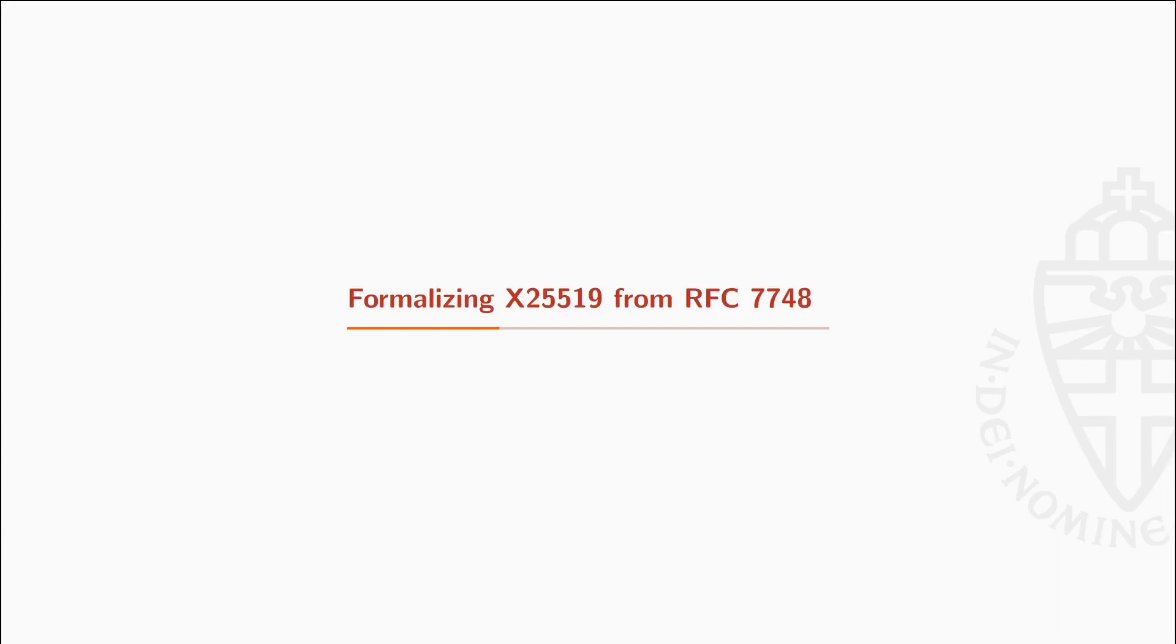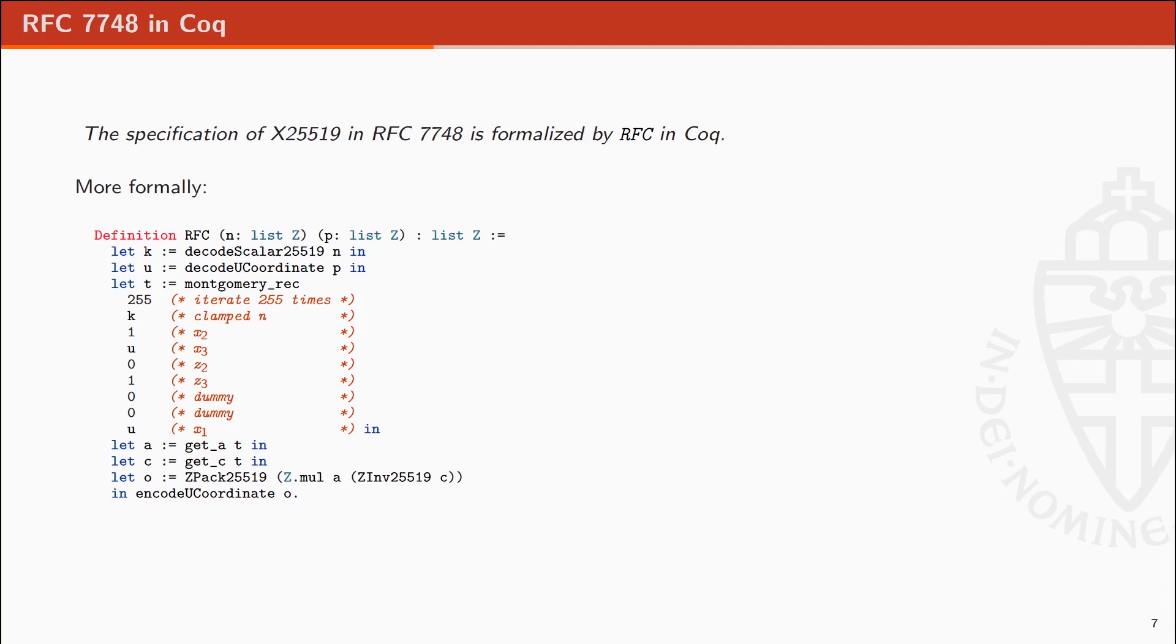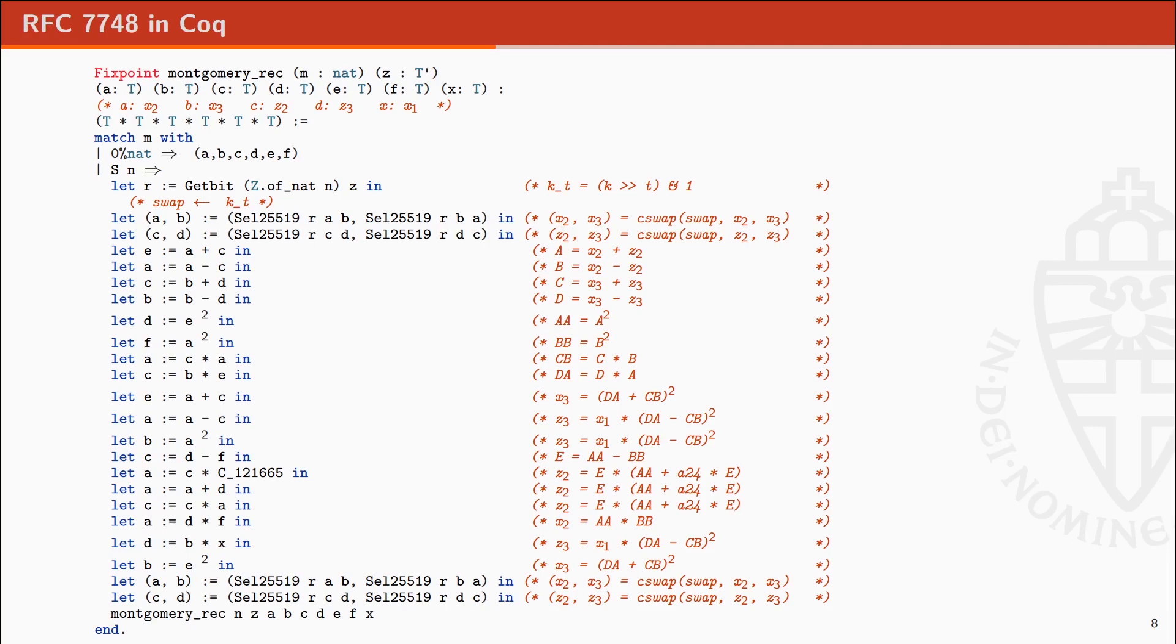Formalizing X25519 from RFC 7748. We formalize the RFC as a Coq function. This formalization is a straightforward translation of the RFC where we place ourselves as close as possible to the text. In the main function, called RFC, we decode the scalar and the coordinates, apply the Montgomery ladder and encode the results.